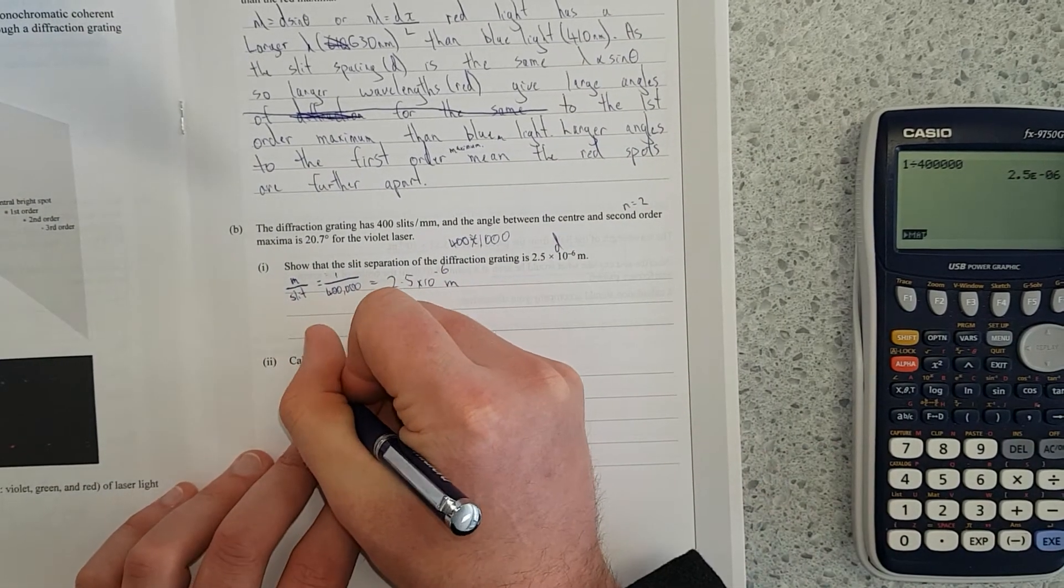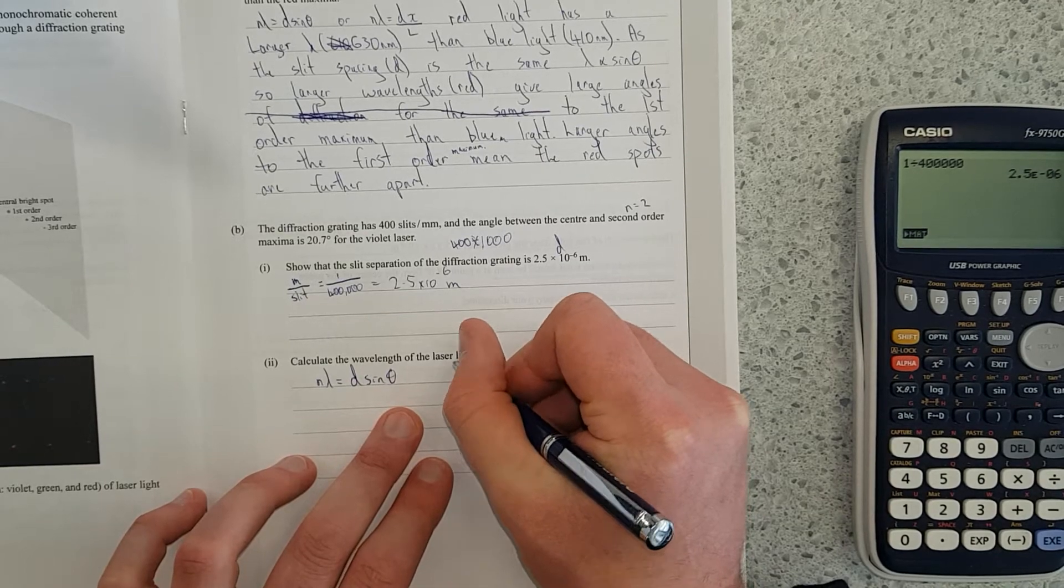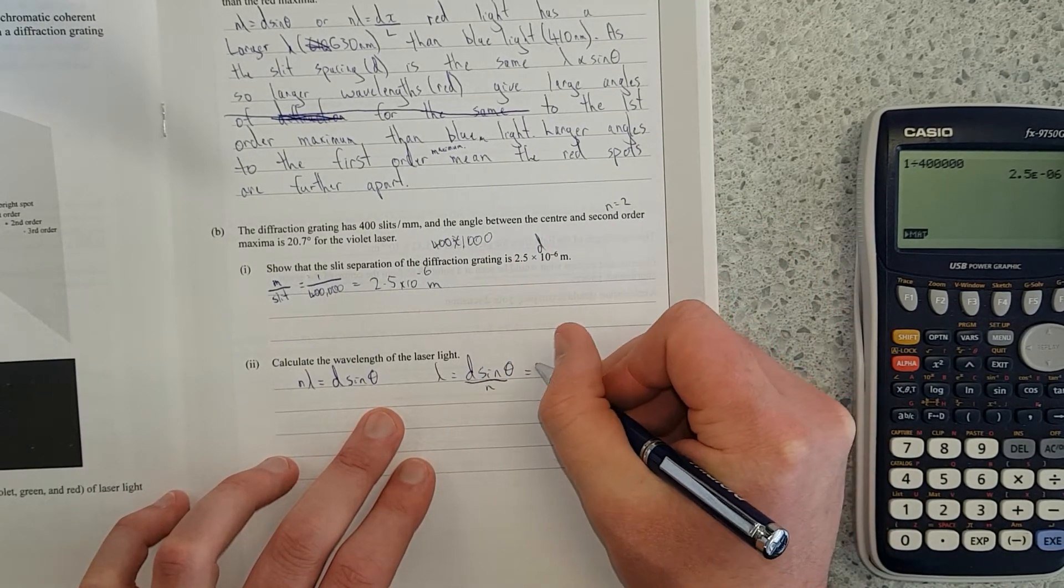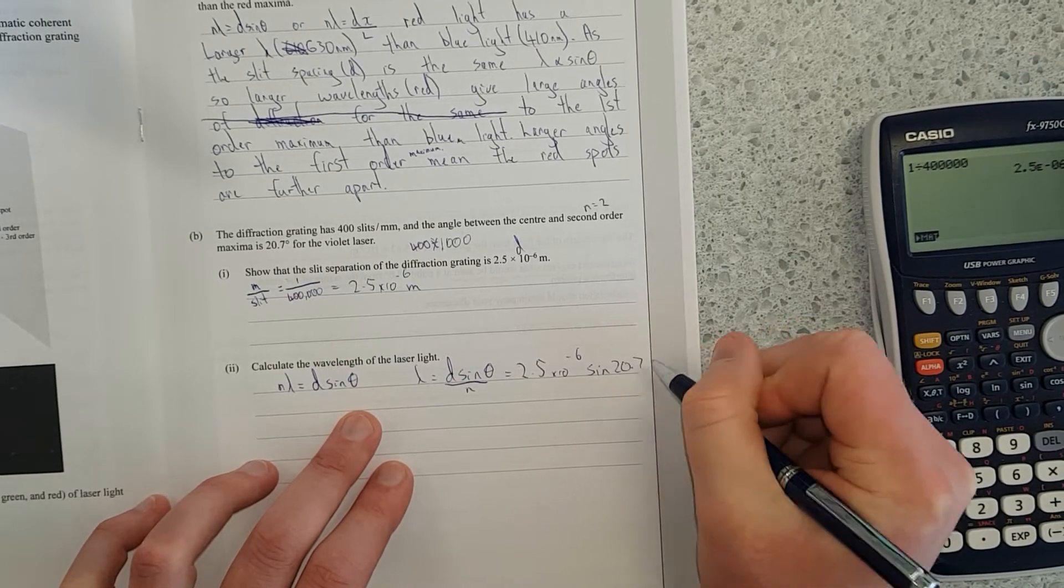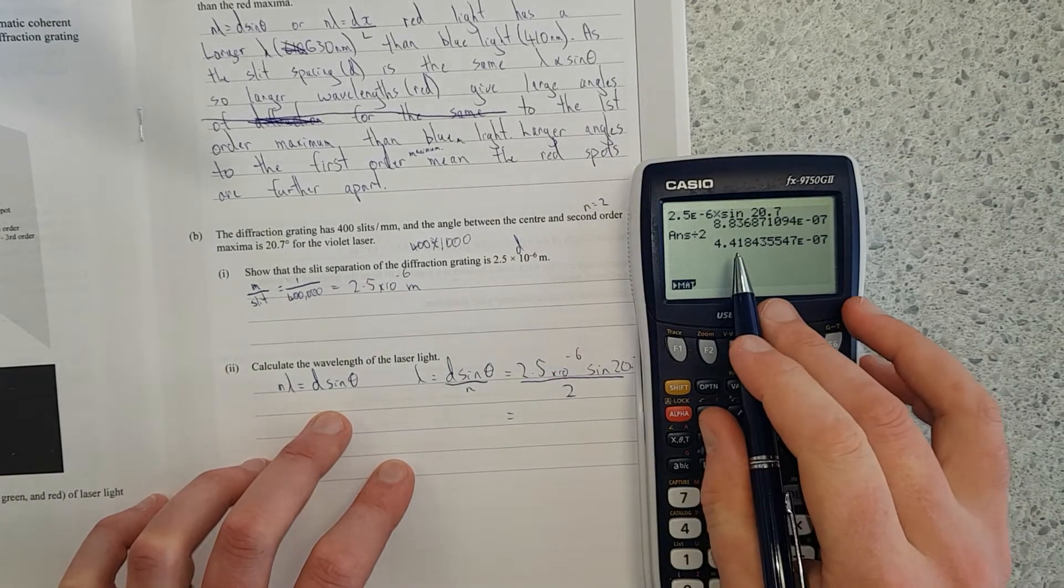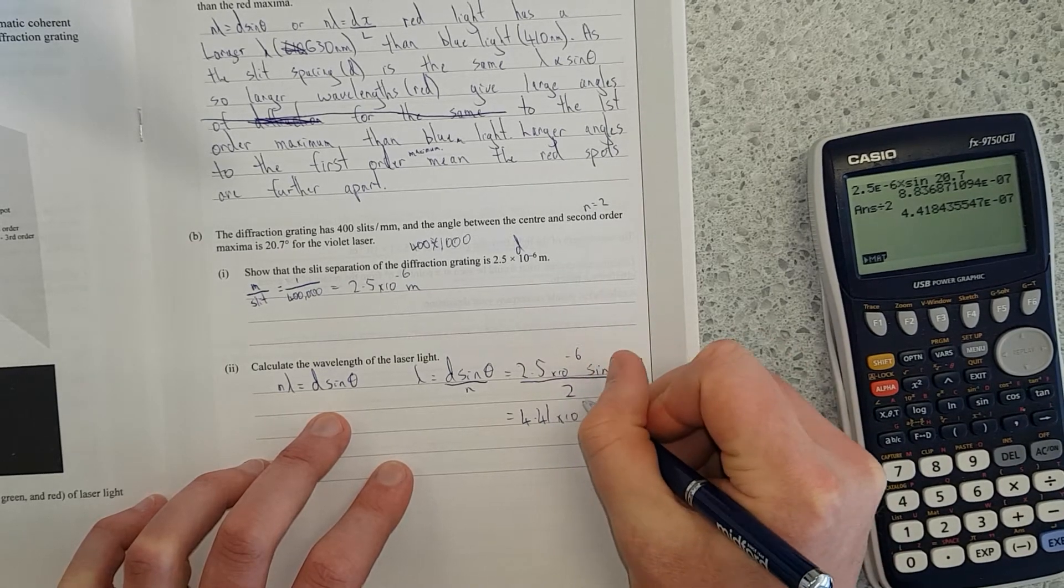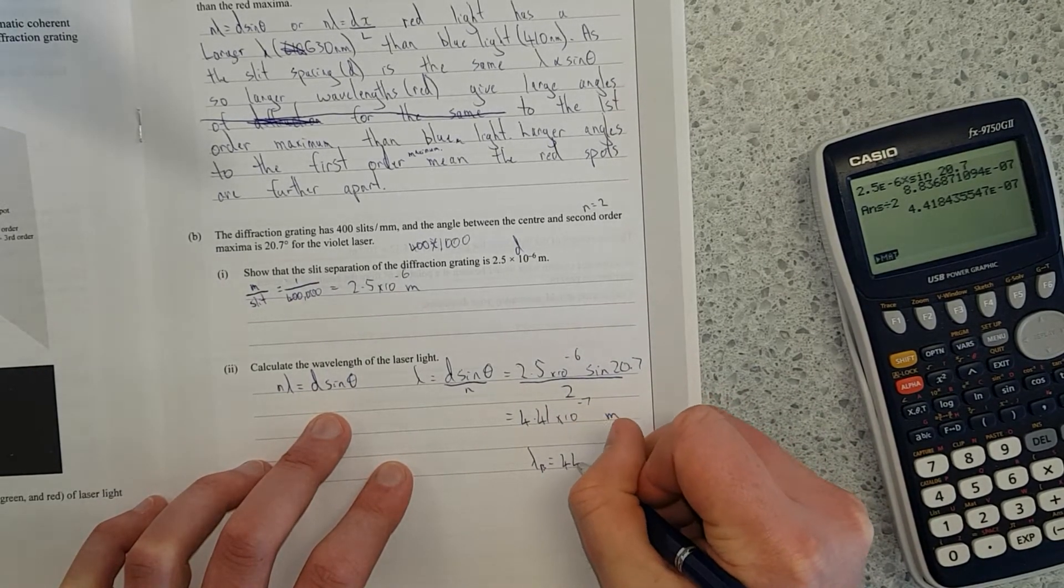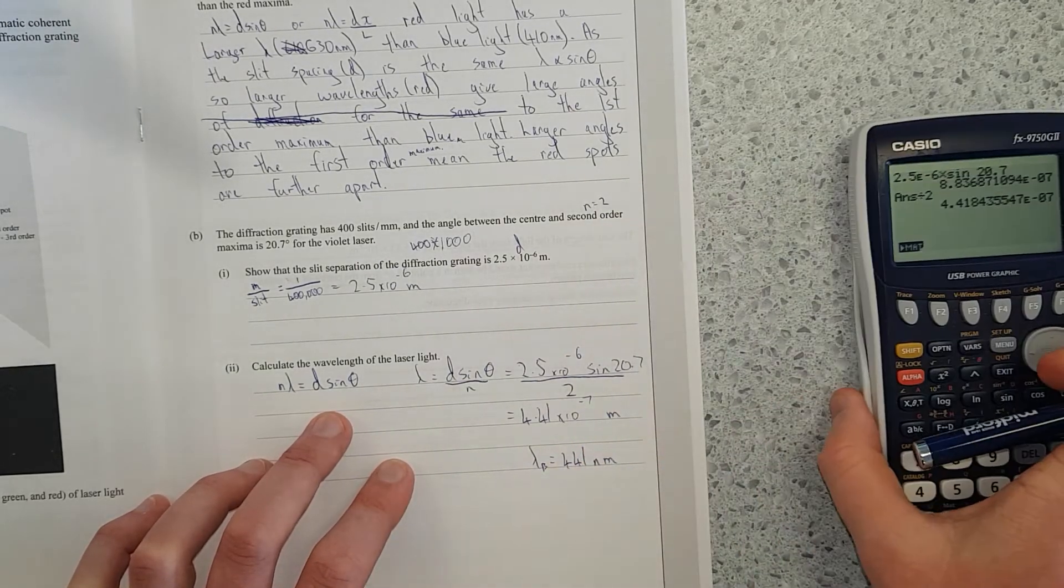Calculate the wavelength of the laser light. N lambda equals d sine theta. In other words, lambda is equal to d sine theta divided by n, which is equal to 2.5 times 10 to the negative 6 times sine 20.7 divided by 2. And the result is equal to 441 nanometers.